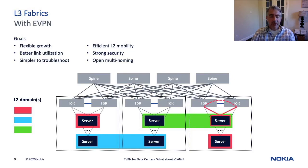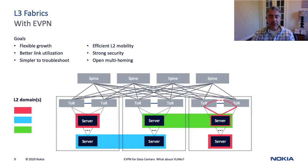EVPN can also provide an improved and open multi-homing solution for end-host resiliency. This could also be applied at the data center edge — not only from the server to the ToR, but also at the data center edge. And we now have operational simplicity by using a single control plane protocol for our MAC and IP advertisements, as well as for multi-homing. Multi-homing is a key part of EVPN and something that we'll cover in a future video.